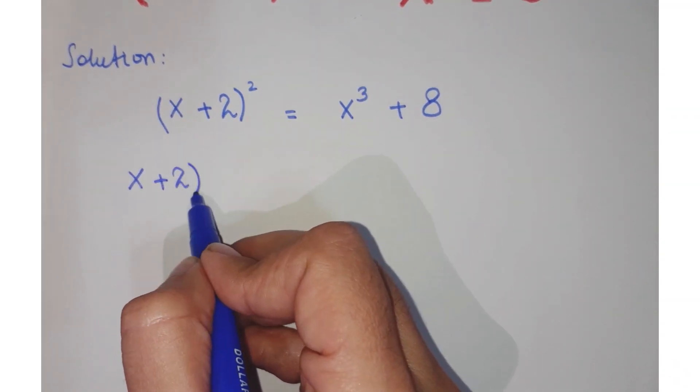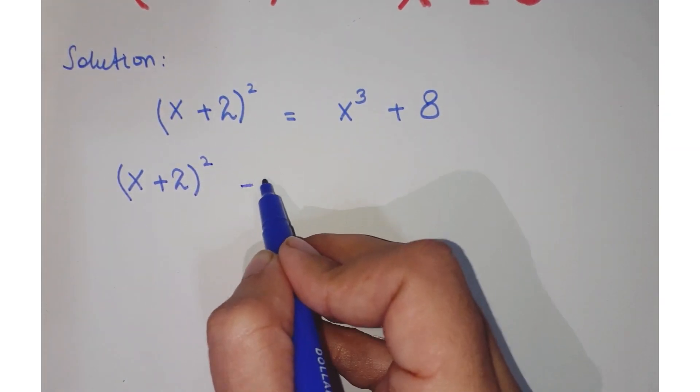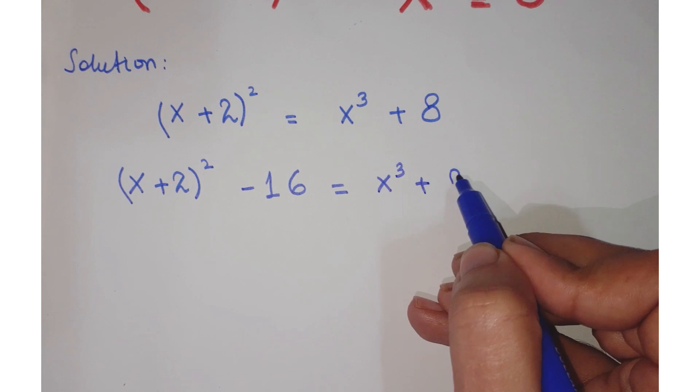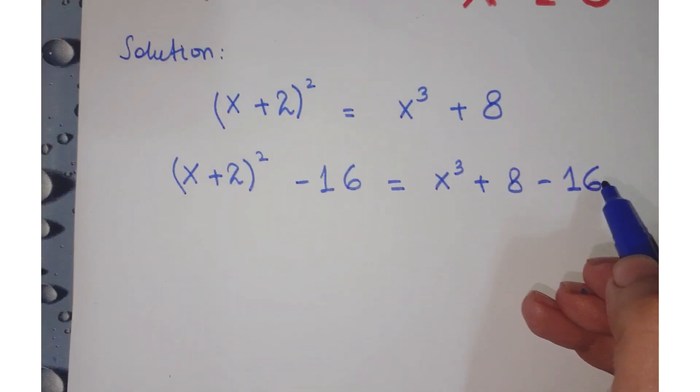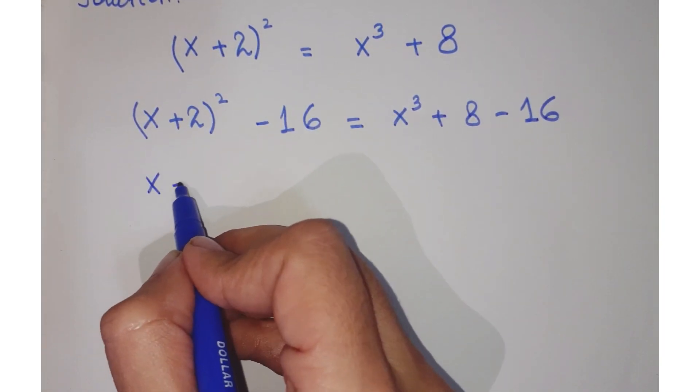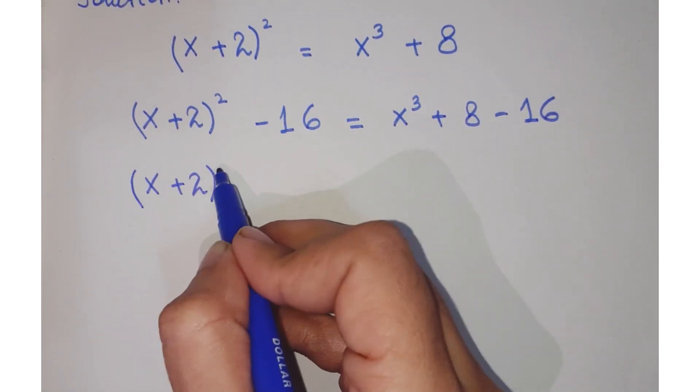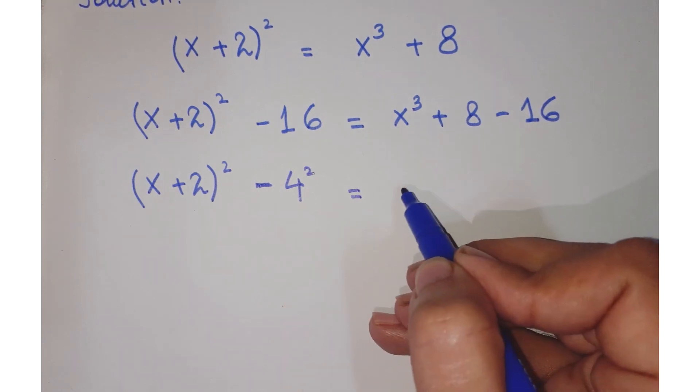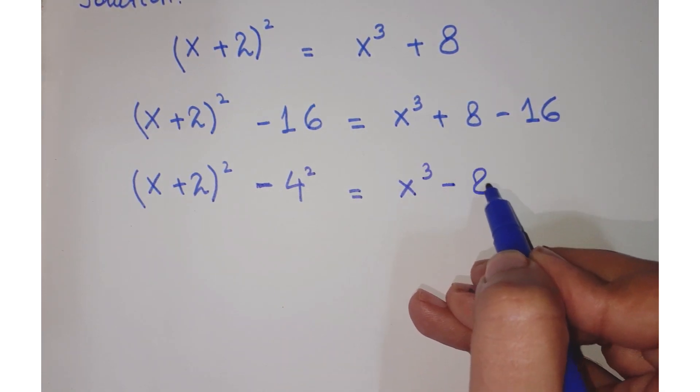Now subtract 16 on both sides. So you get the equation like this. Further, write 16 as the square of 4. So you have 4² and here you have x³ - 8.